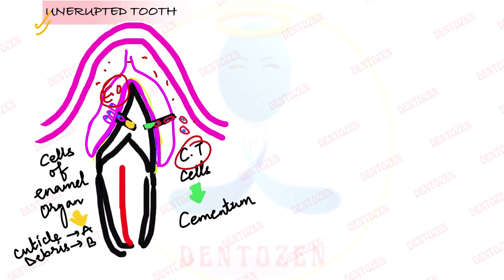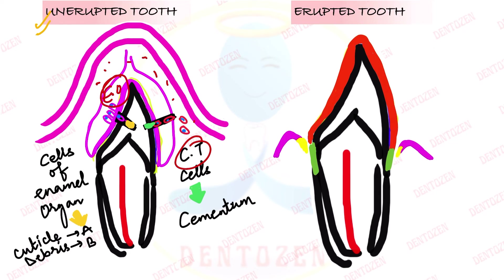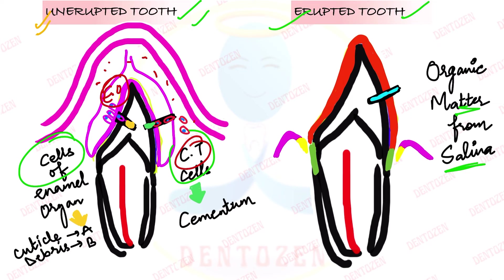In the second scenario, when the tooth is erupted in the mouth, it is surrounded by saliva. If a crack forms at this stage, organic material from saliva fills the crack. So in the unerupted tooth, cells fill the crack, whereas in the erupted tooth, organic matter from saliva fills the lamellae.